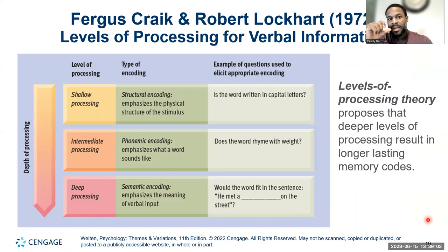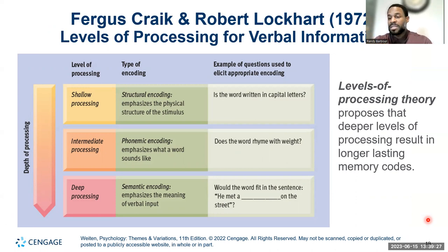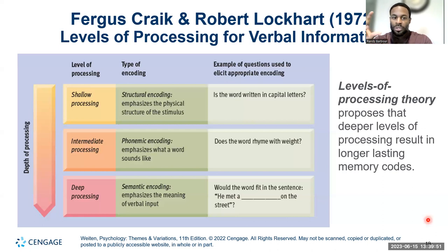Fergus Craik and Lockhart discovered that there are several levels of processing for verbal information: shallow, intermediate, and deep processing. The shallow level focuses on the physical structure of the words — capitalization, punctuation, uppercase, lowercase. We're emphasizing the physical structure of the stimulus.